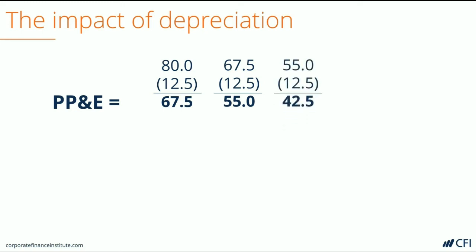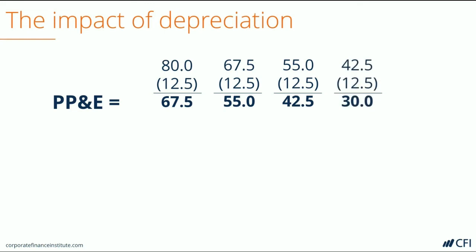In year 3, we follow the same pattern: taking the prior year ending balance, subtracting the Depreciation Expense, and getting this period's Closing Balance of 42.5. Finally, in the last year — year 4 — when we deduct Depreciation, we arrive at the Scrap Value of 30. That means that from here on out, if this asset remains on the Balance Sheet, it will stay at 30 and not go lower. If it is sold in the future for any value, then it will be removed from the assets of the Balance Sheet.